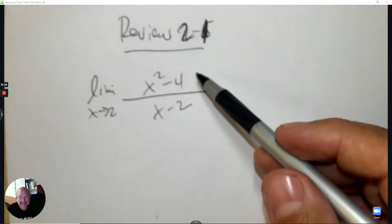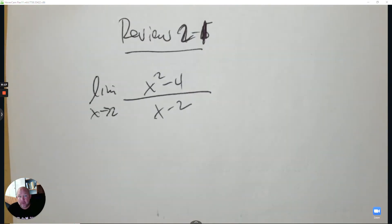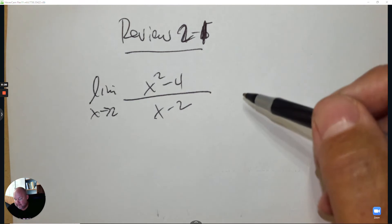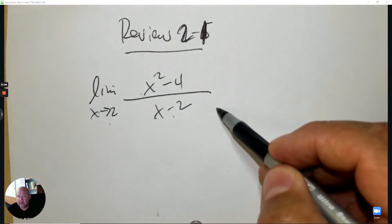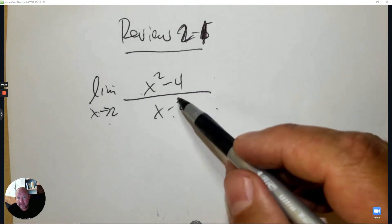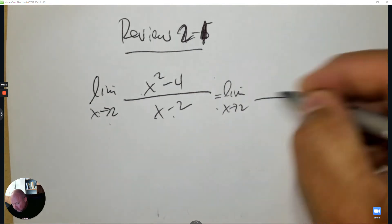These are limits that are indeterminate, where we use algebra to remove the undefined part. If I plug 2 into the numerator and denominator, it's 0 over 0. That means it's indeterminate, so there's a possibility that we could factor, which we can.